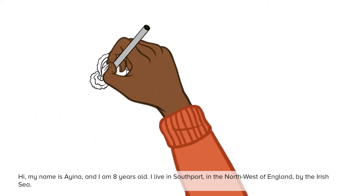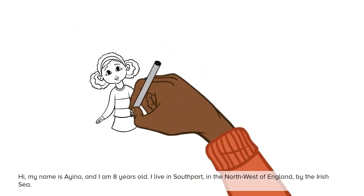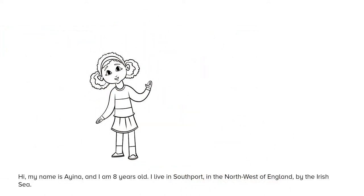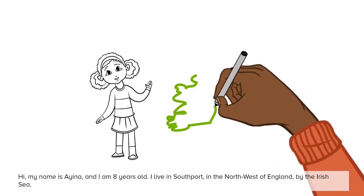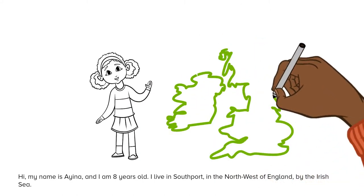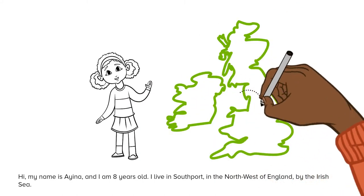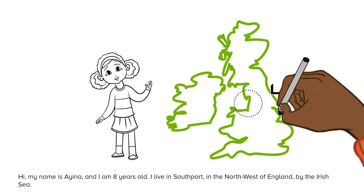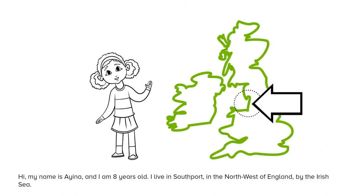Hi, my name is Iena and I'm eight years old. I live in Southport in the northwest of England by the Irish Sea.